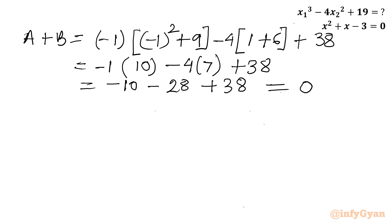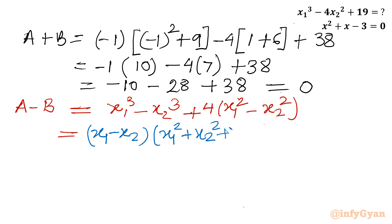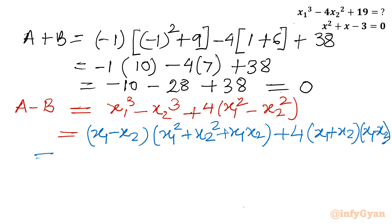Now I will calculate a - b. Writing a - b gives x1³ - x2³, then plus 4(x1² - x2²), and the +19 - 19 cancels to 0. Applying the a³ - b³ identity: (x1 - x2)(x1² + x2² + x1x2), and the difference of squares: (x1 + x2)(x1 - x2).